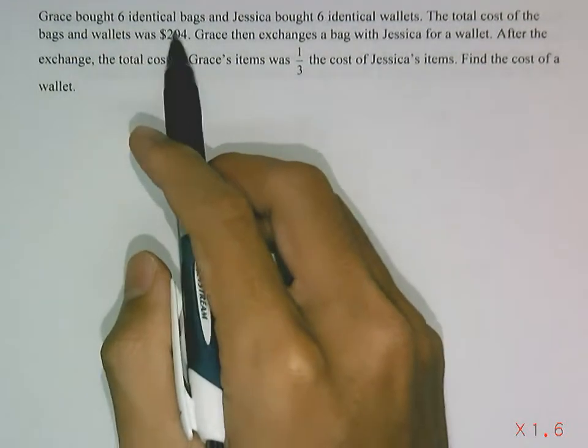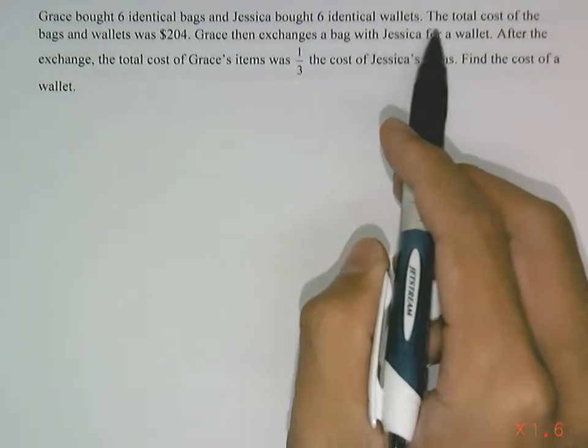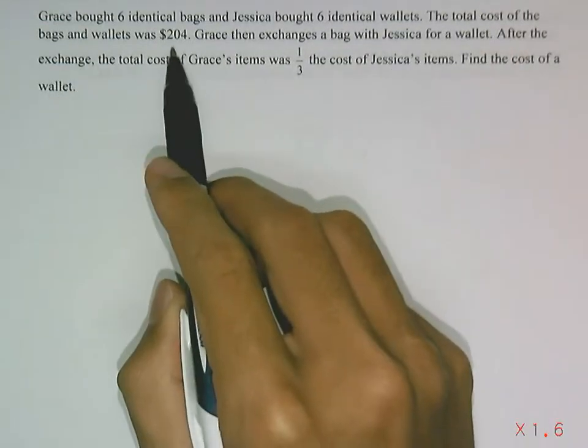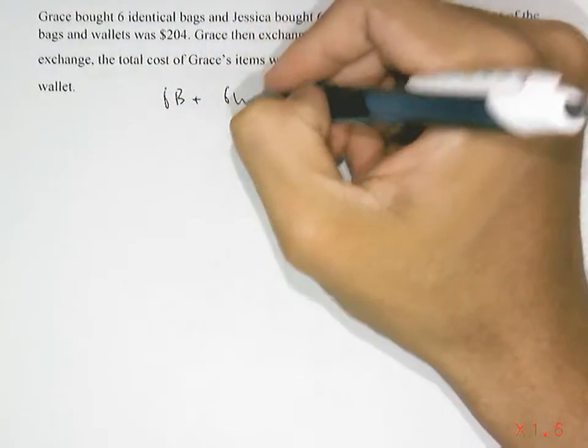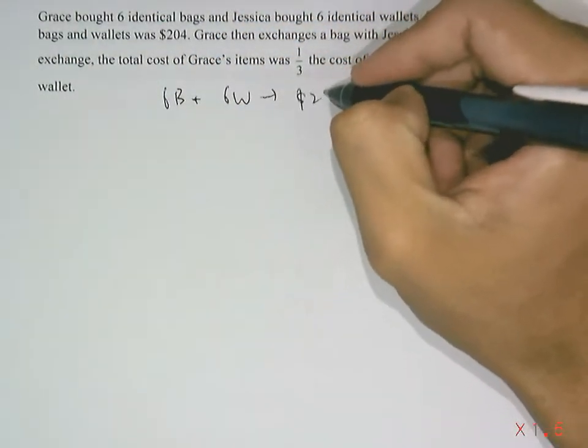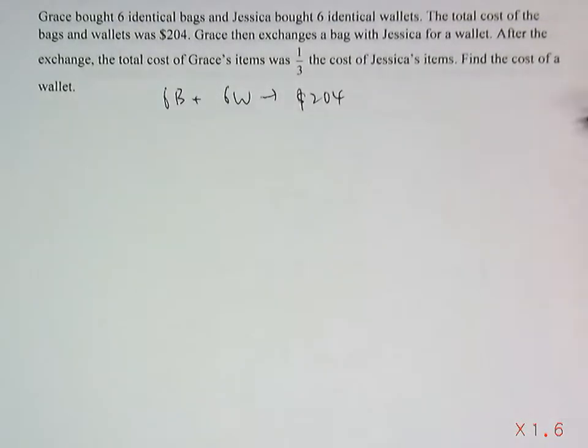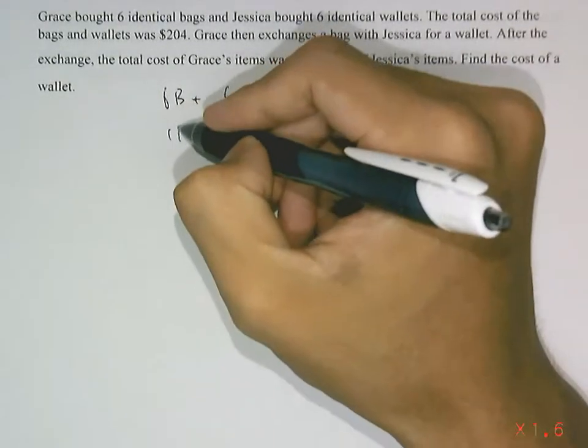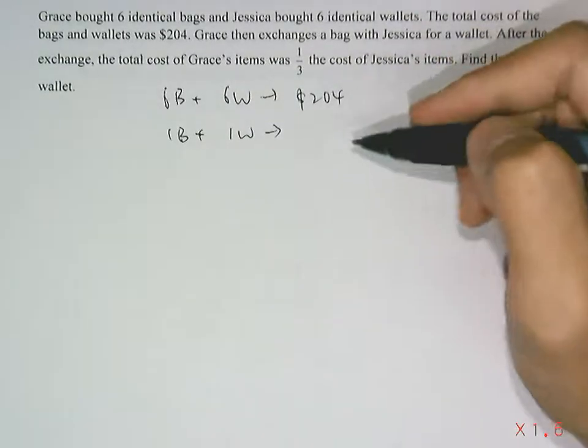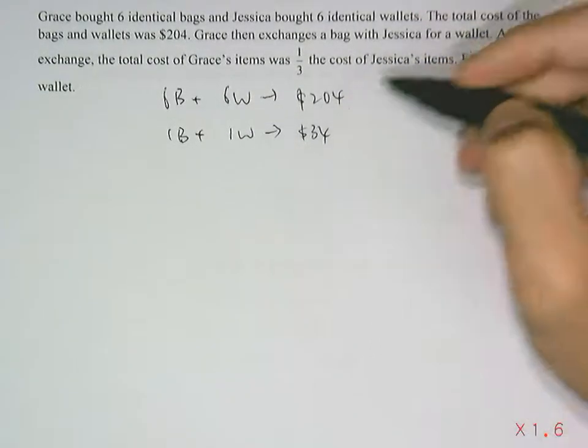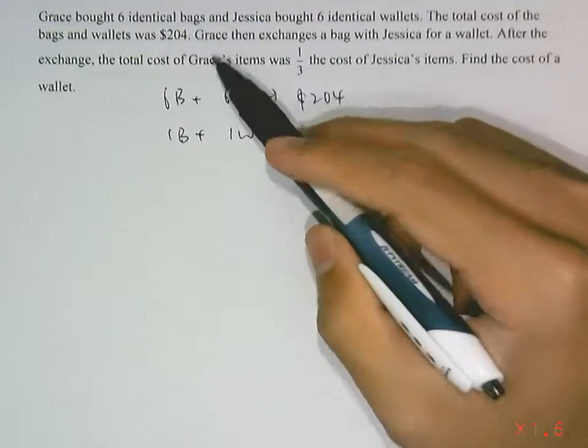Grace bought 6 identical bags and Jessica bought 6 identical wallets. The total cost of the bags and wallets was $204. So we know that 6 bags and 6 wallets cost a total of $204. This also means that if you want to find one bag and one wallet, we can simply divide throughout by 6, which will give us $34 for one bag and one wallet.